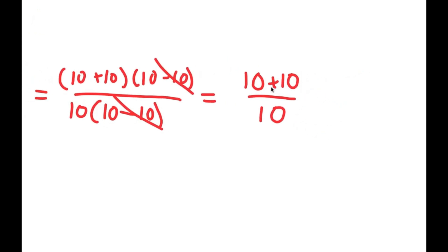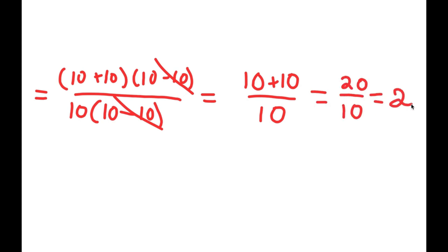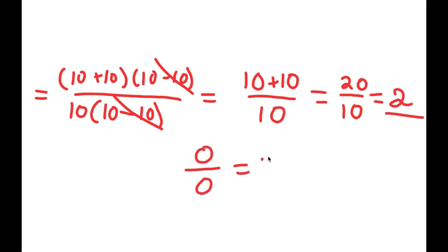Well, 10 plus 10 is 20. So I have 20 over 10, and 20 divided by 10 is 2. So there — I just proved that 0 over 0 is equal to 2.